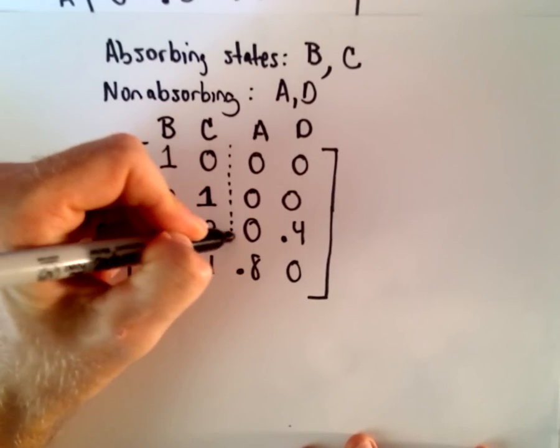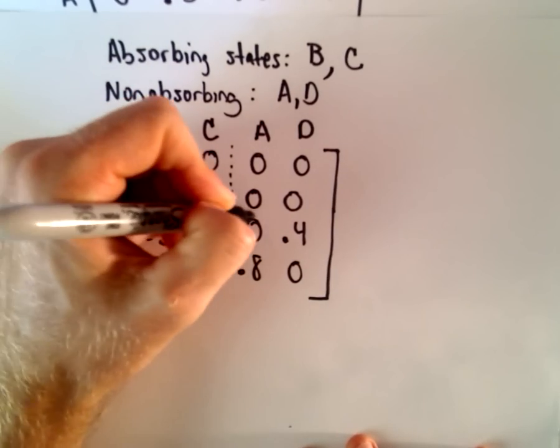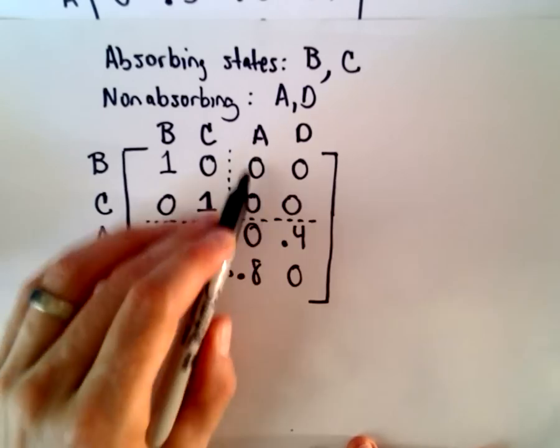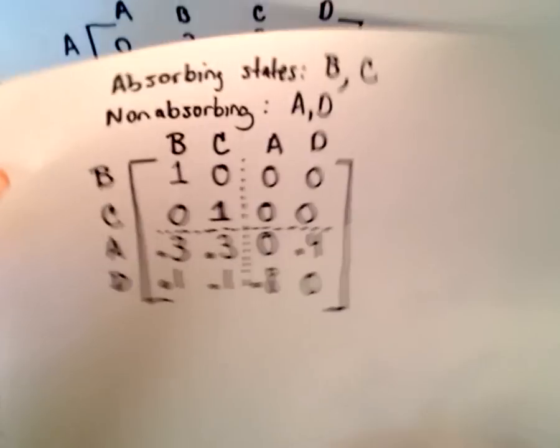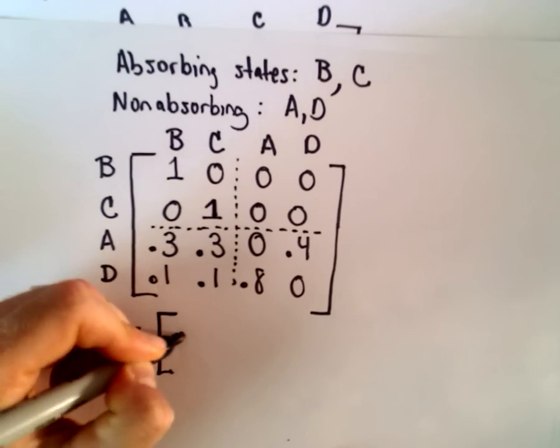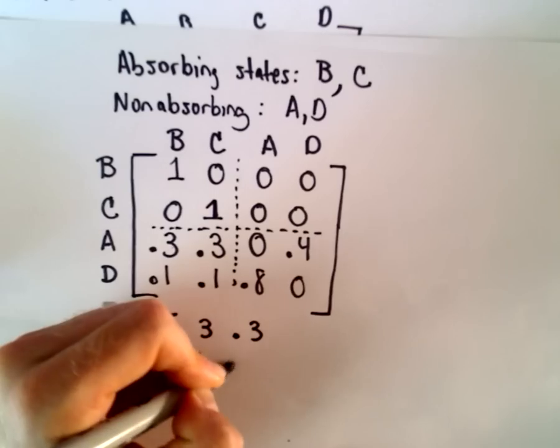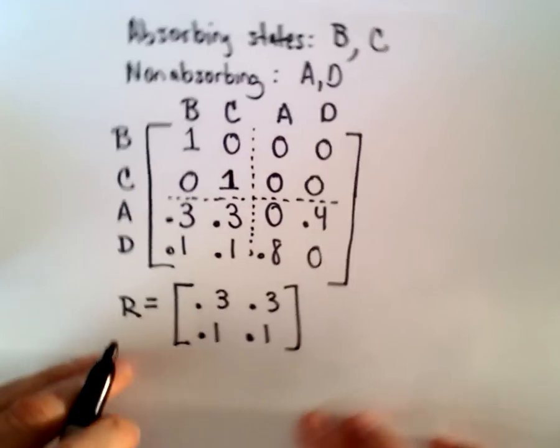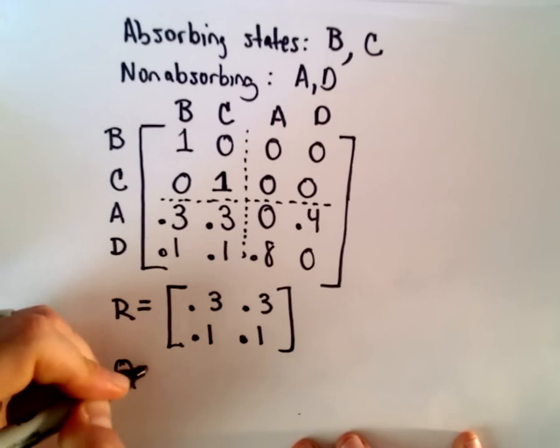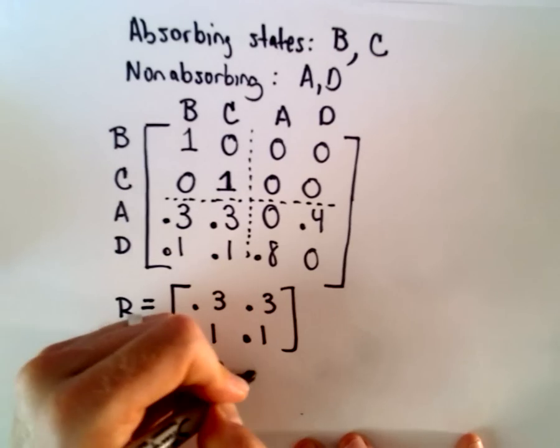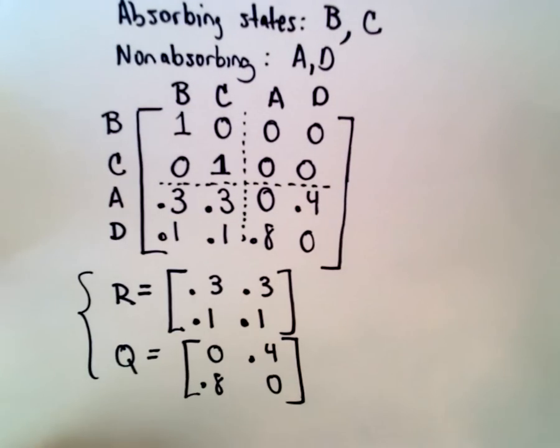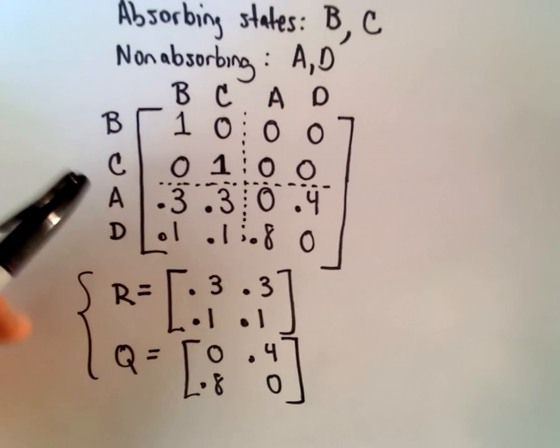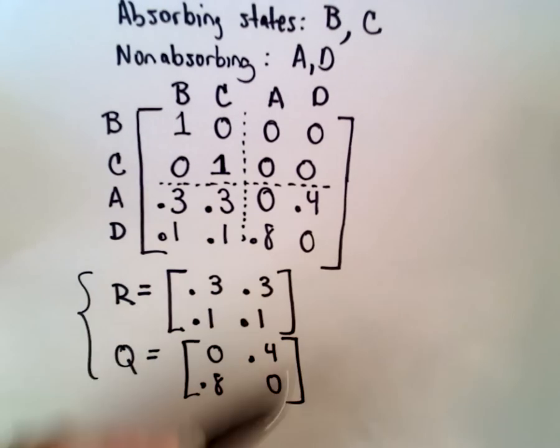And notice if we break this up, just like we had it a second ago. Notice we have our identity matrix in the top left corner. In the top right, we have all the zeros. And then we have these matrices that we're calling R and Q. So in this case, the submatrix R would have entries 0.3, 0.3, 0.1, 0.1. And our matrix Q, that has entries 0.4, 0.8, and 0. And these two matrices are going to be important in helping us find our limiting matrix. So we're going to put things in standard form, label, and then we're going to do some stuff with these.